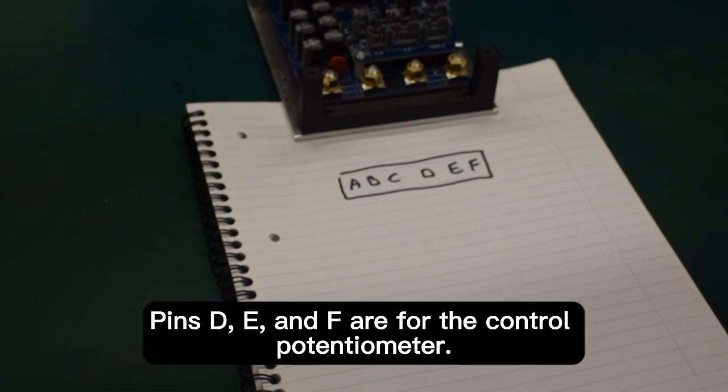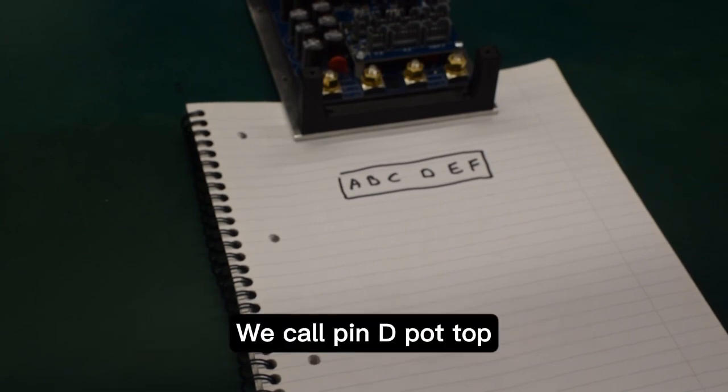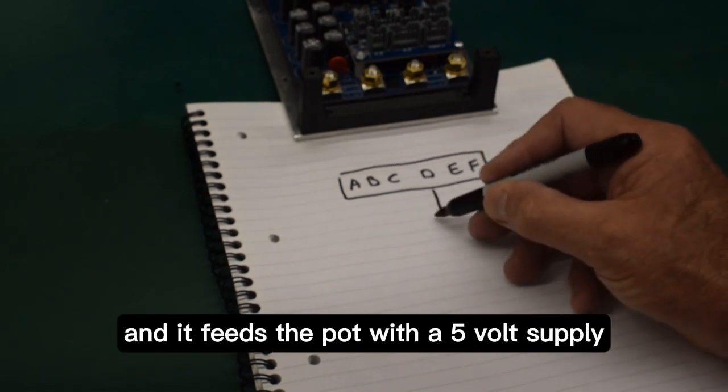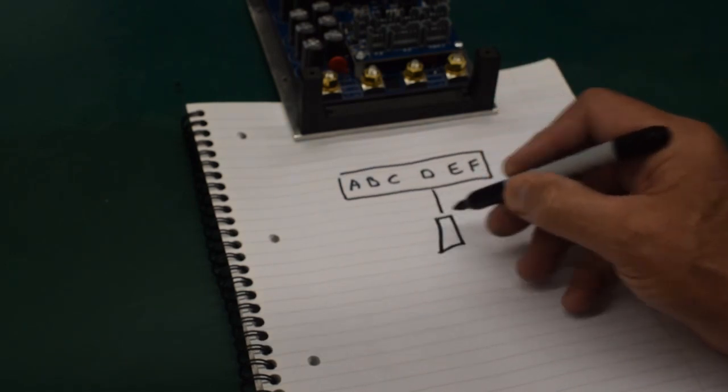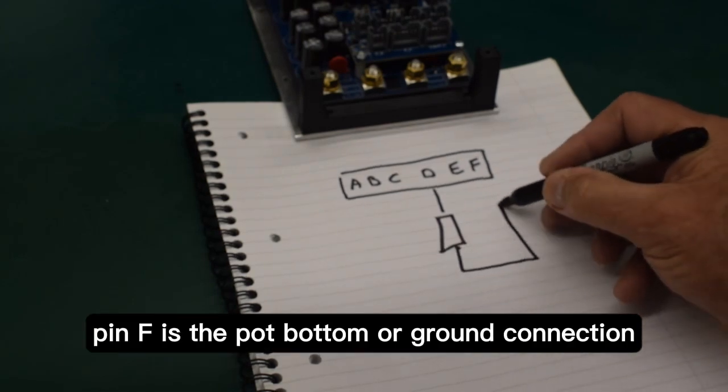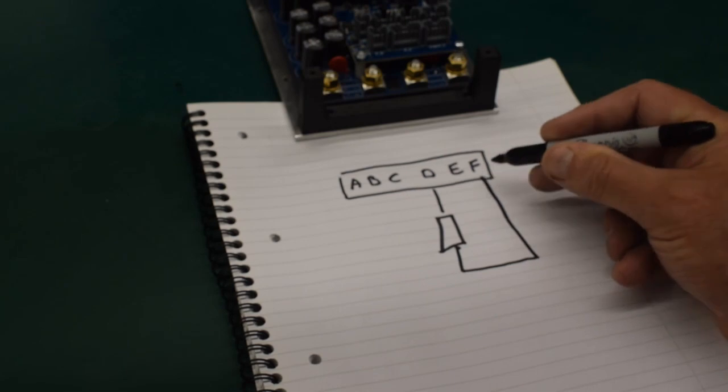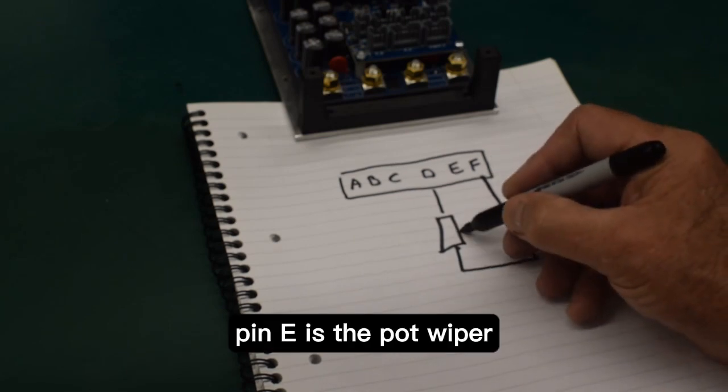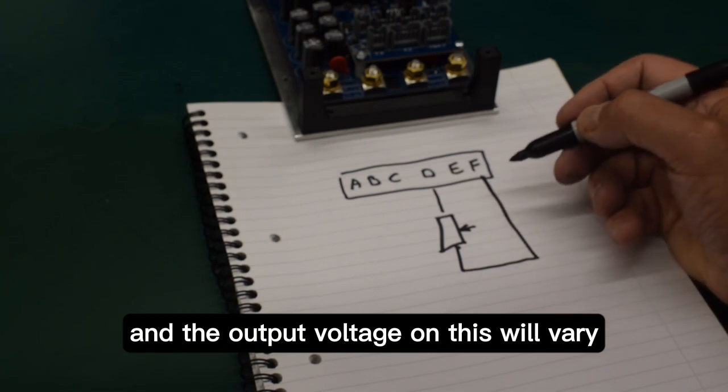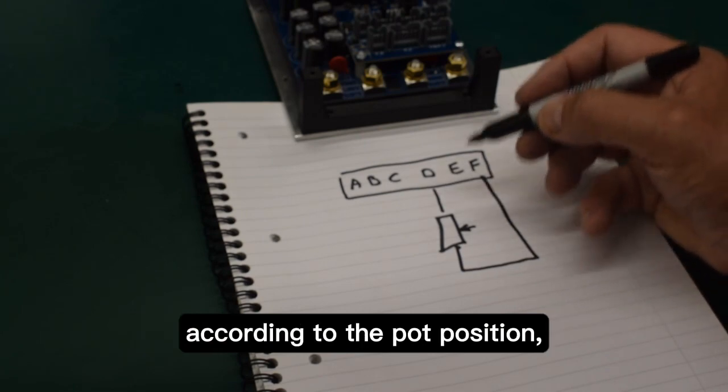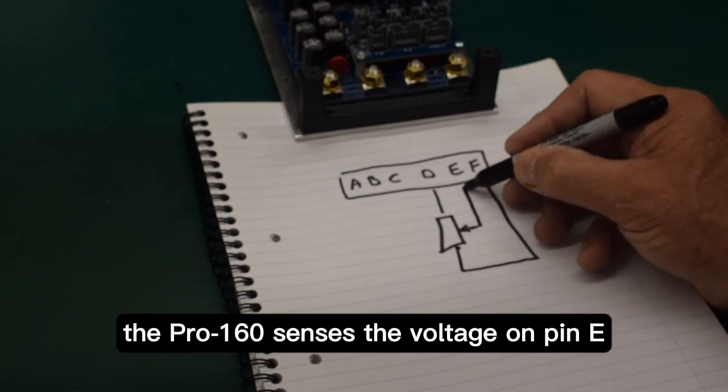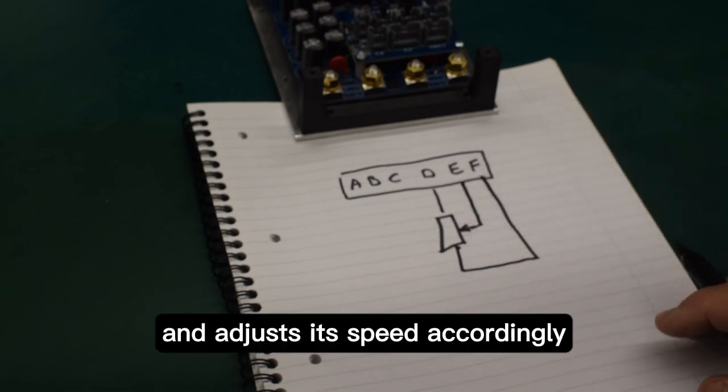Pins D, E and F are for the control potentiometer. We call pin D pot top and it feeds the pot with a 5V supply. Pin F is the pot bottom or ground connection. Pin E is the pot wiper and the output voltage on this will vary according to the pot position. The Pro 160 senses the voltage on pin E and adjusts its speed accordingly.